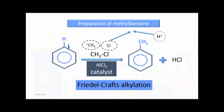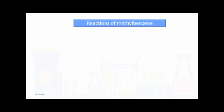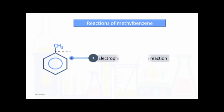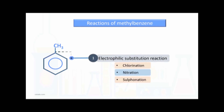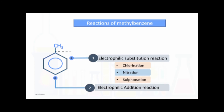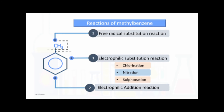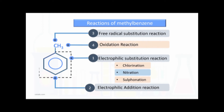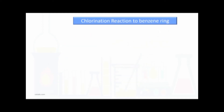The reactions of methylbenzene include: first, reactions in the benzene ring — electrophilic substitution reactions such as chlorination, bromination, nitration, sulfonation, and so on; electrophilic addition reactions like hydrogen addition and chlorine addition; and reactions in the side chain, that is the methyl group — free radical substitution reactions and oxidation reactions.